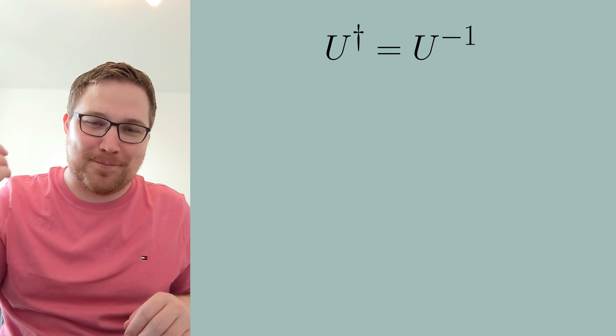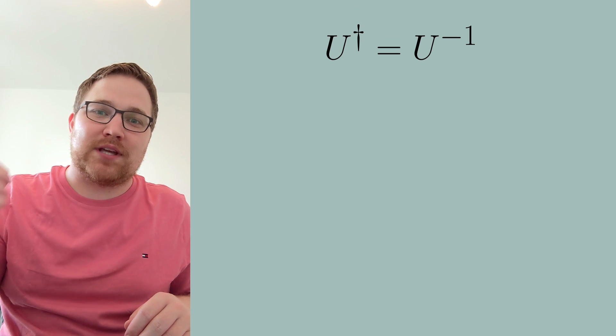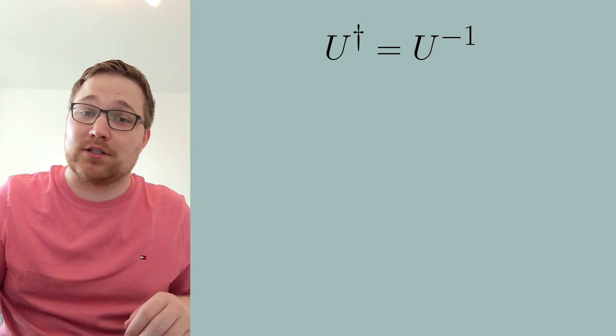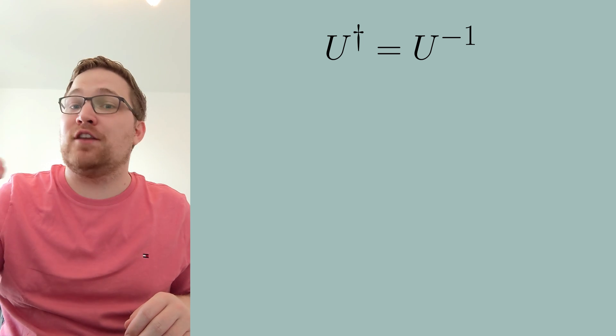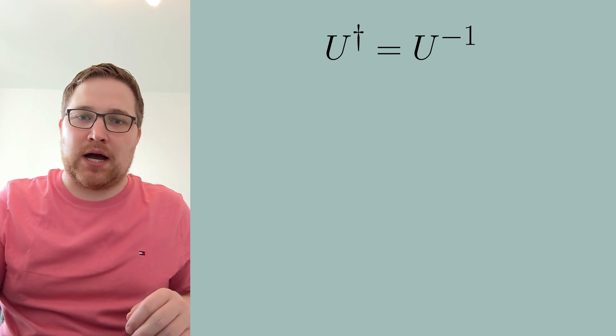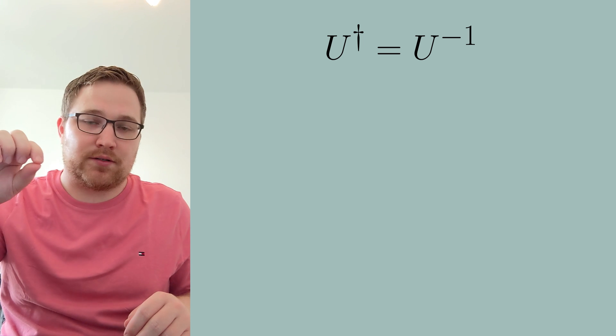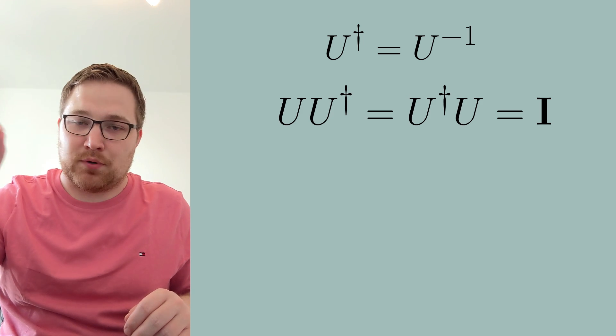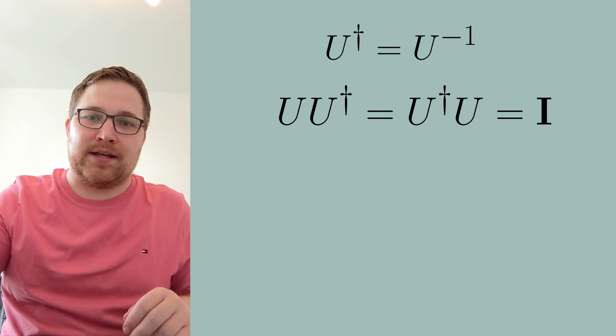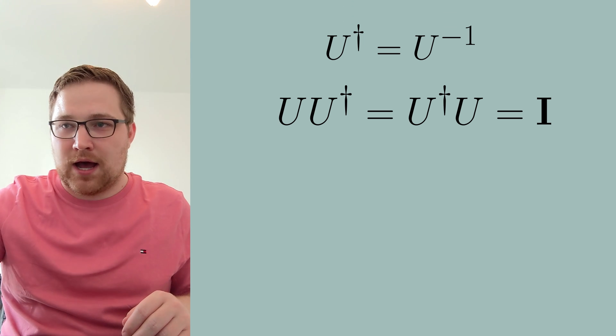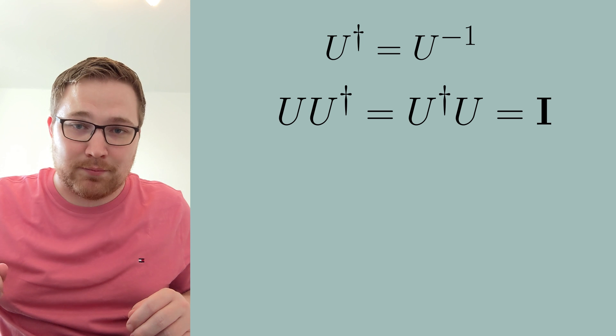Let's state the most basic fact that we need for this story. What is a unitary matrix? A unitary matrix U is a matrix that if you take its conjugate transpose, you get its inverse matrix. In particular, U times what we call U dagger — its conjugate transpose — is equal to U dagger U, which is equal to the identity matrix.